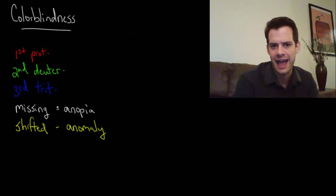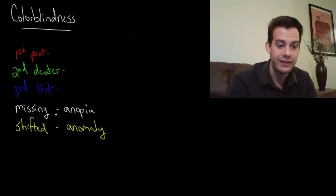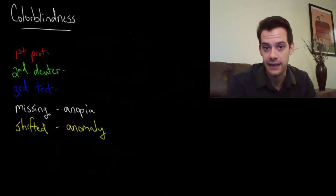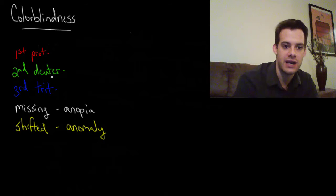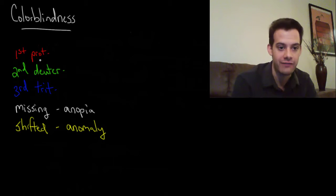There's two things that can happen to one of your cone types. One thing that can happen is it can be missing completely. This is more rare but it can happen. So if you're missing a cone type we use the suffix anopia which means without vision. So then we simply attach this without vision to whichever of these cone types is affected. So you could have protanopia, which would be missing the first cone type, the red. The second type would be deuteranopia, missing the second or medium cone type. Or tritanopia would be missing the third type.